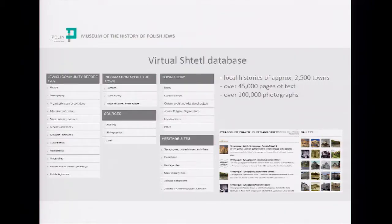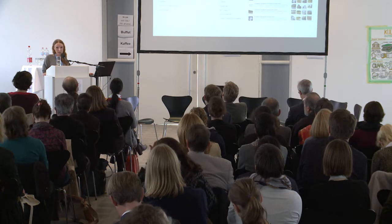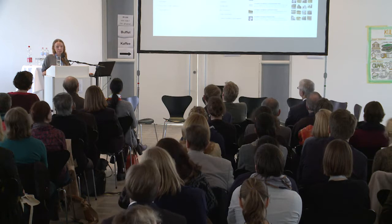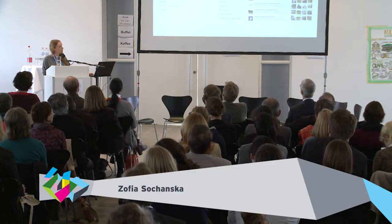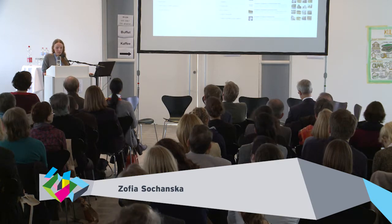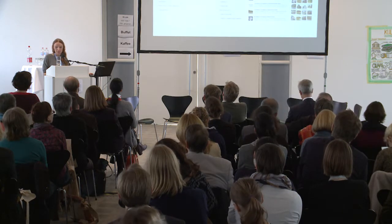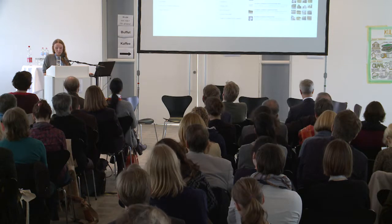Looking at the Virtual Sztetl database, there are 2,500 localities profiled. There are almost 84 million characters of text, giving over 45,000 pages, corresponding to approximately 300–350 full-size printed volumes. If we multiply this by the number of languages in which the portal is planned to be available — namely English, Russian, German, Hebrew, Lithuanian, and Belarusian — the number would reach 1.5 billion characters, making it by far the largest historiographical portal in Poland.